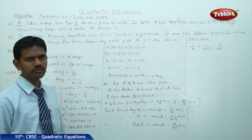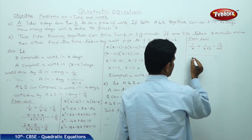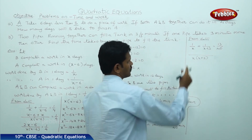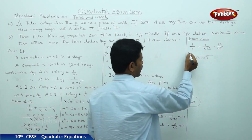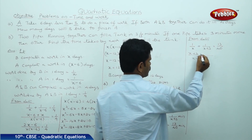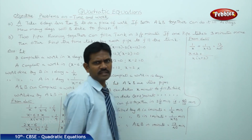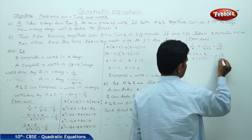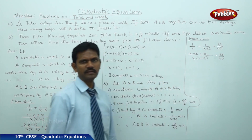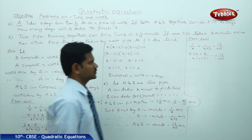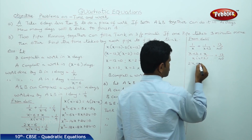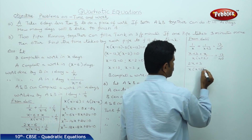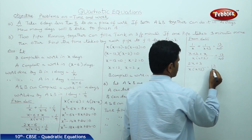From the data: 1 by X plus 1 by X plus 3 is equal to 13 by 40. Taking X into X plus 3 as LCM: X cancels and X plus 3 cancels, giving 2X plus 3 by X into X plus 3 is equal to 13 by 40.